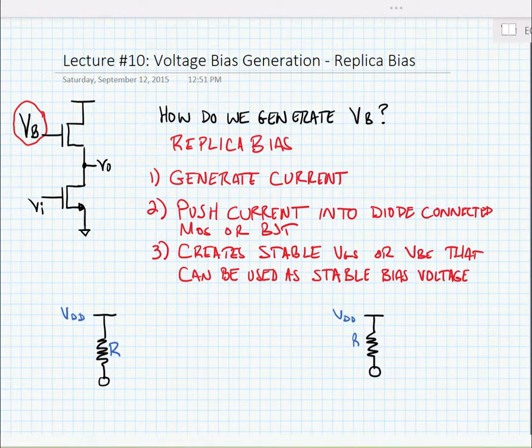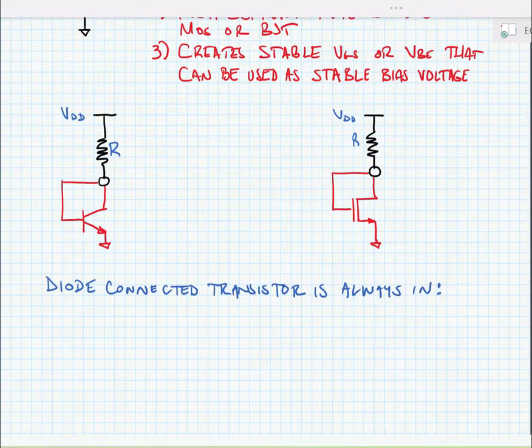So let's look at this in a schematic. Here I have two cases: this is a diode connected BJT and a diode connected MOS. We can find the currents for these.